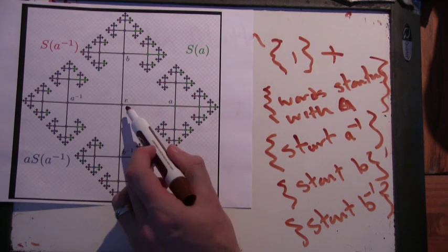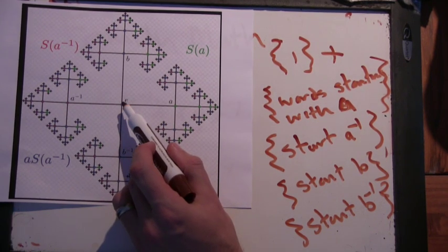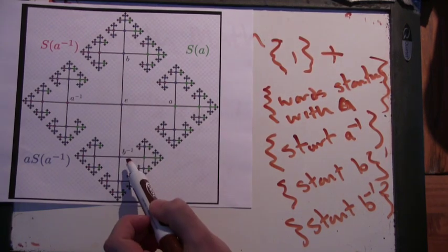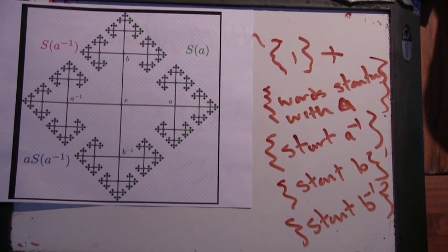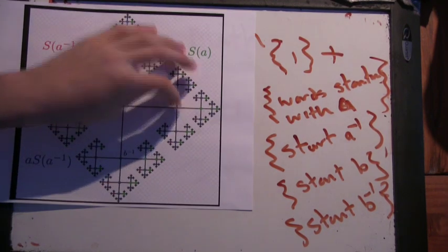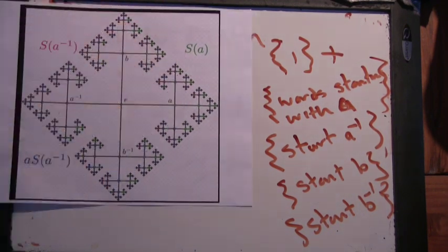Start with B inverse. So it looks like there's five parts of this graph. There's the identity element that's a single point, and then the words that start with A, the words that start with B inverse, the words that start with A inverse, and the words that start with B. And there's no overlap because you can't ever get over to this part of the graph if you start here. That's right. If you start with A, you can never touch the part of the graph that starts with B.